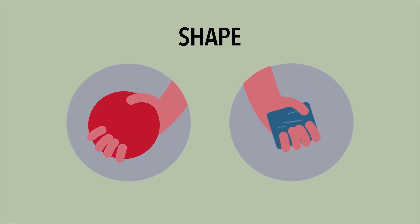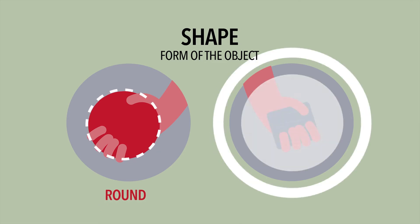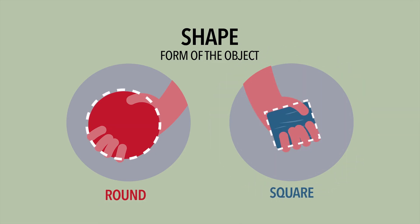let's start with shape. The shape tells us the form of the object. In our example, we can see that the red ball is round, while the blue block of wood is a square. Those are their shapes.